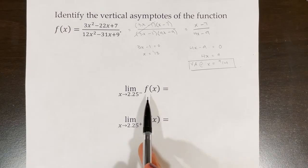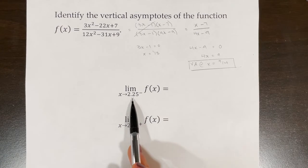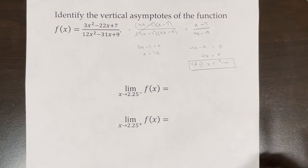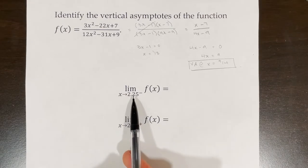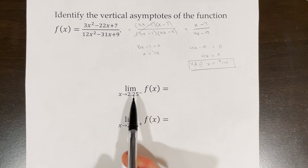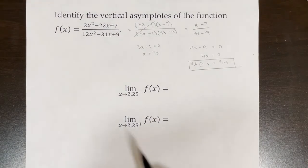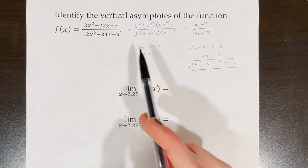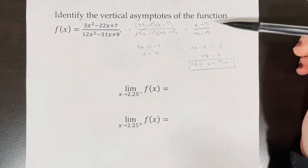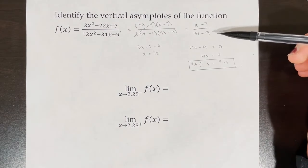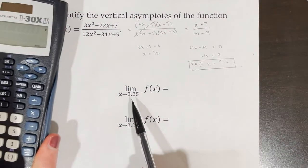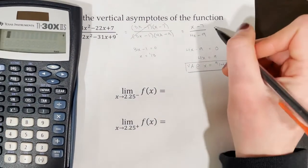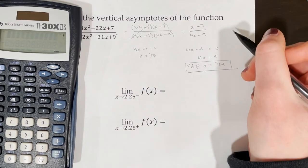Another way to think about this is finding the limit of f(x) as x approaches 2.25, which is the same as 9/4. To find the left-hand limit, we factor and cancel the hole, leaving (x − 7) / (4x − 9). Direct substitution of 2.25 gives something divided by zero, which does not exist.